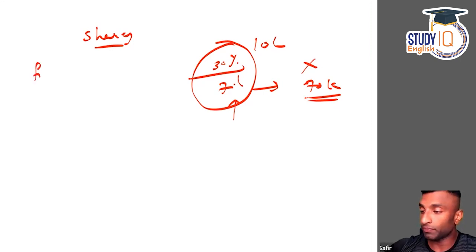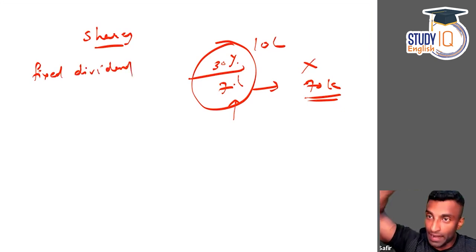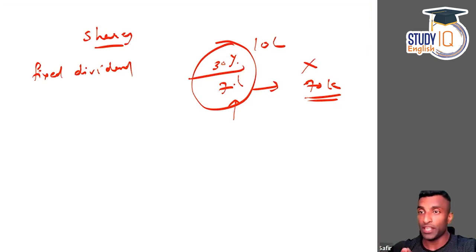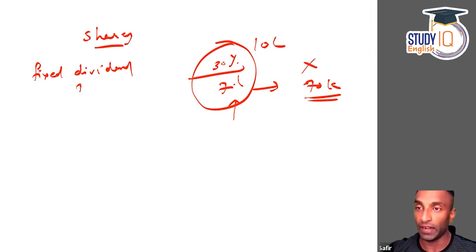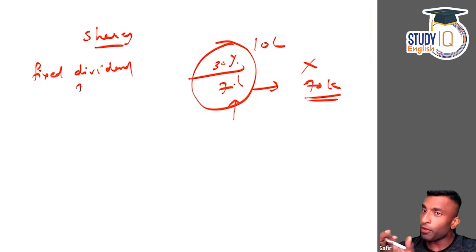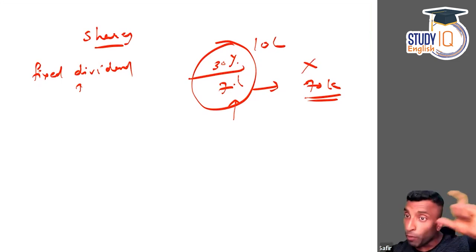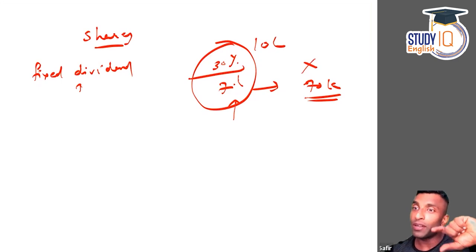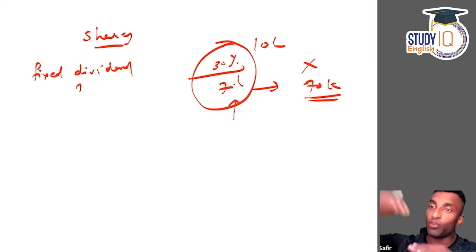Preference shares yield a fixed dividend. If there is no profit, there is no dividend. If there is a small profit, preference shareholders get a fixed dividend first — not in proportion to shareholding. A debenture holder gets return even with no profit. A normal shareholder gets nothing if there is no profit, and if there is only small profit, the preference shareholder takes it. If there is higher profit, the ordinary shareholder gets a return based on their share percentage.